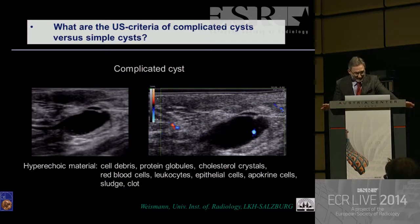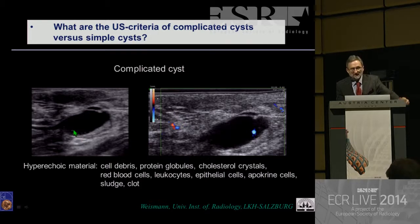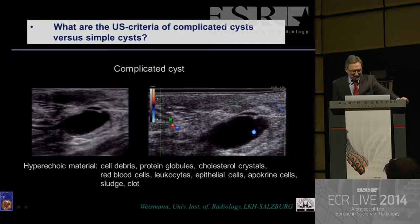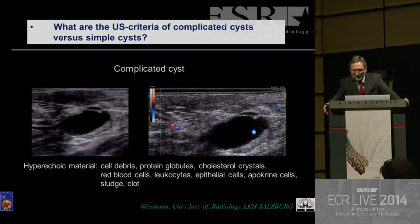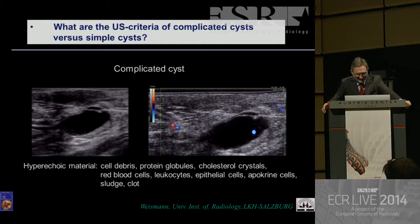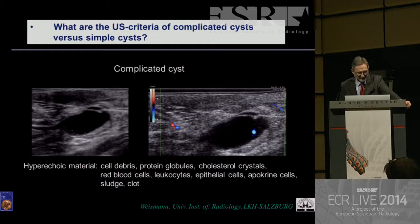Another example: you see some echogenicities inside the cyst — it can be debris, sometimes calcium. And if you activate the color Doppler, you can see some color popping up and moving through this anechoic fluid. This is typical for sedimentation of cell debris, globules, and crystals inside this fluid.